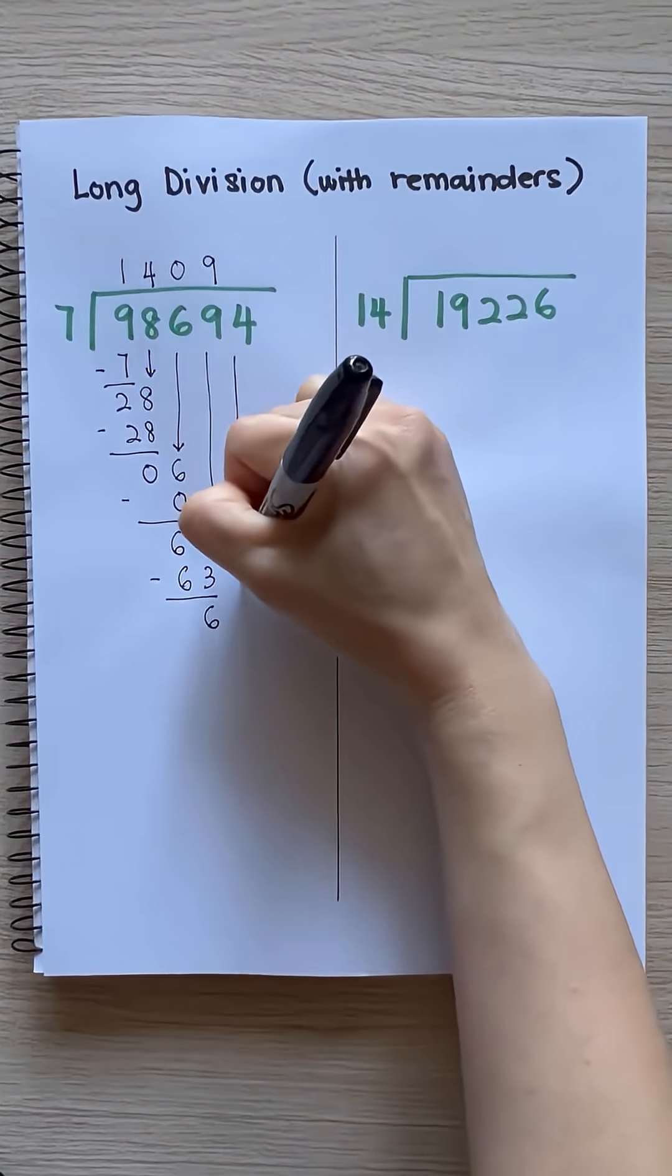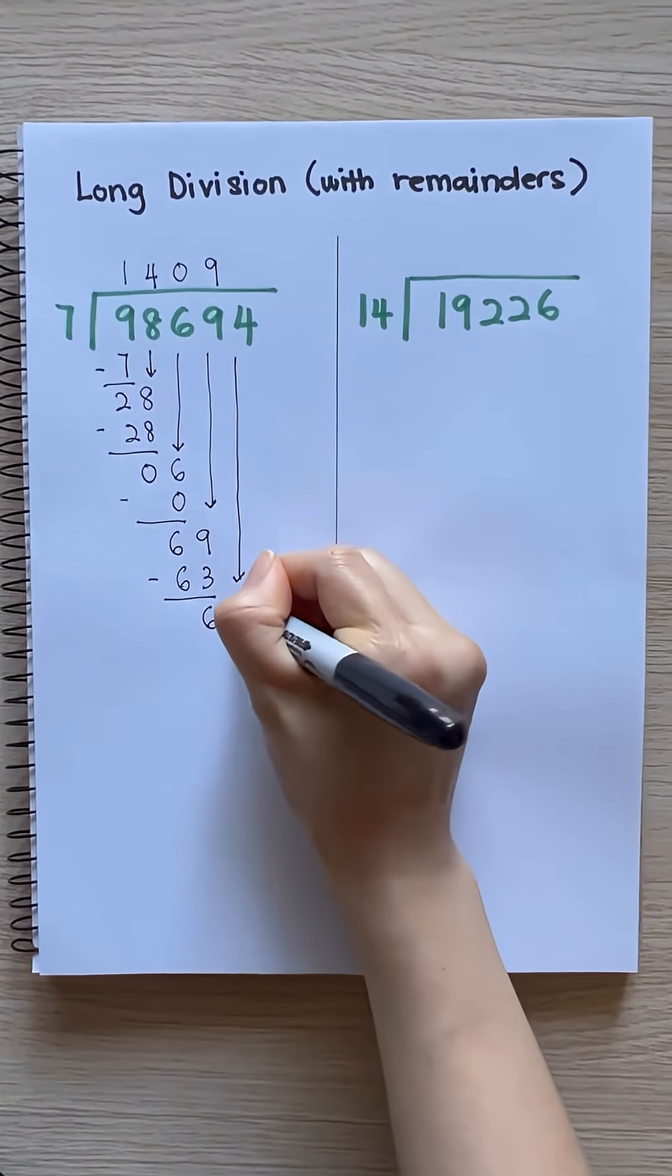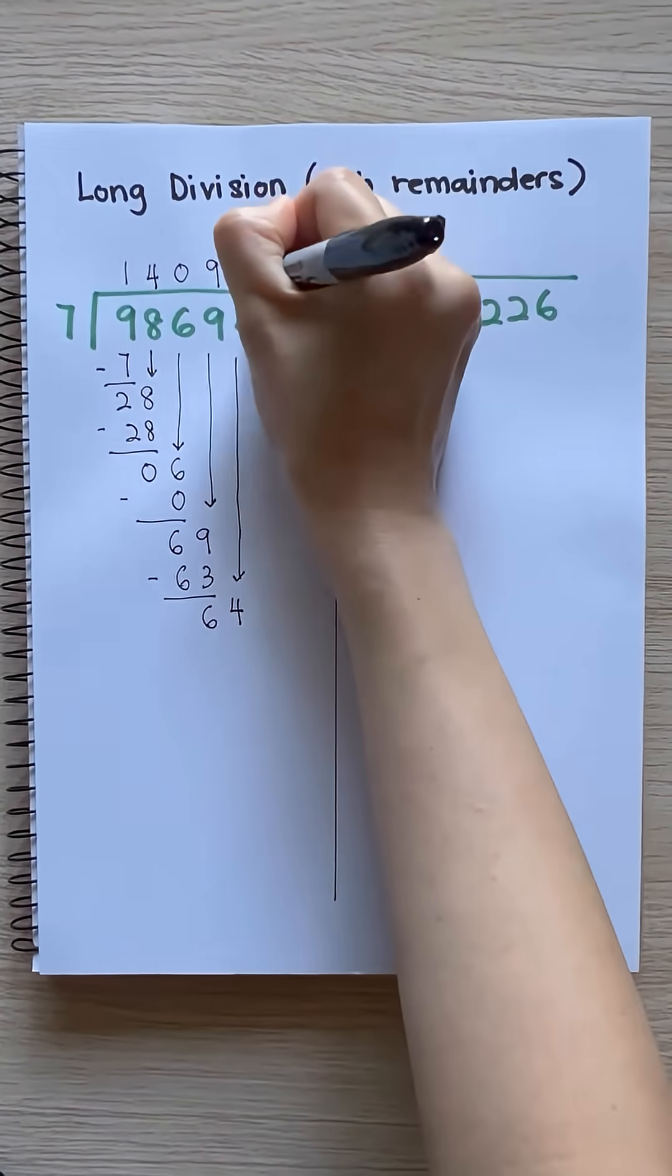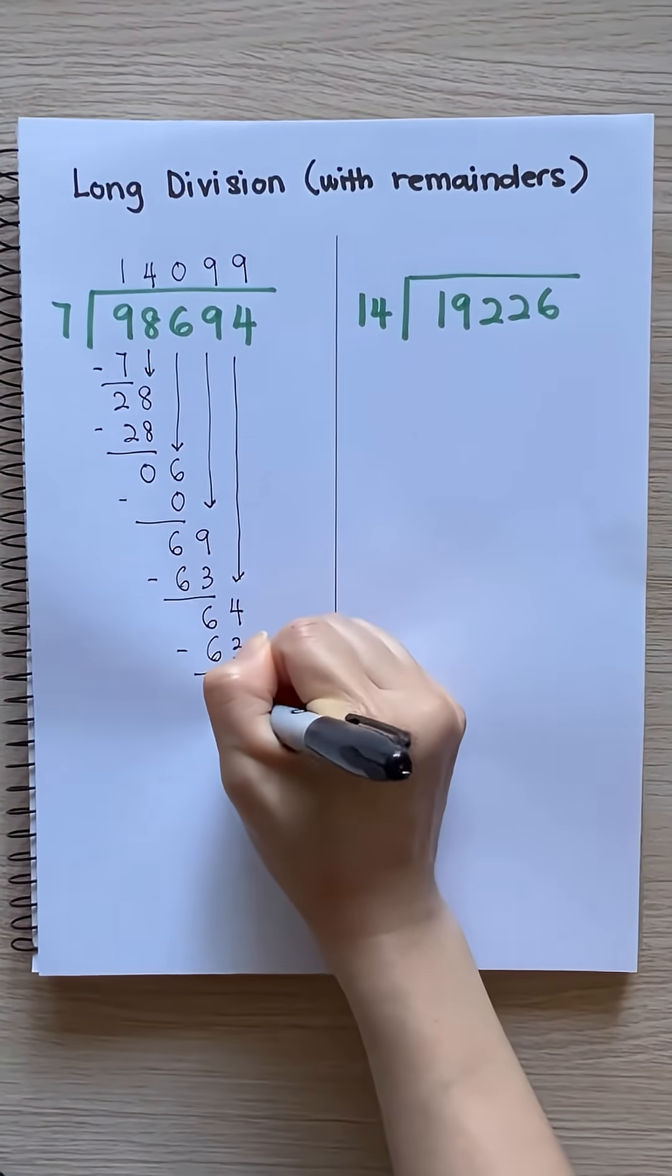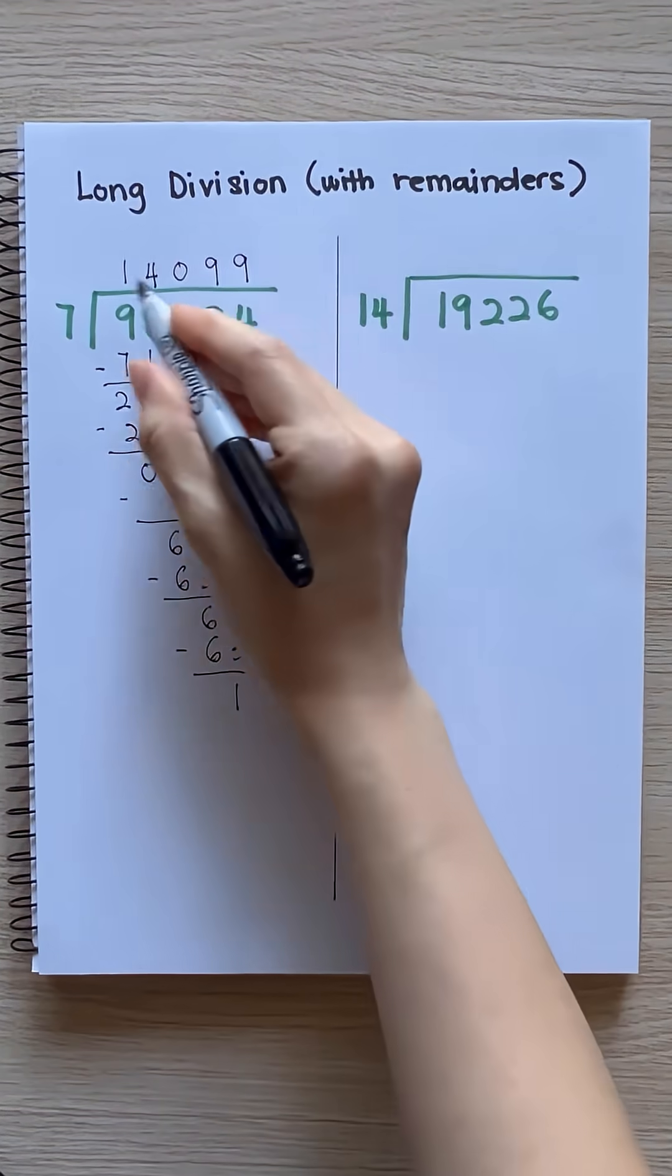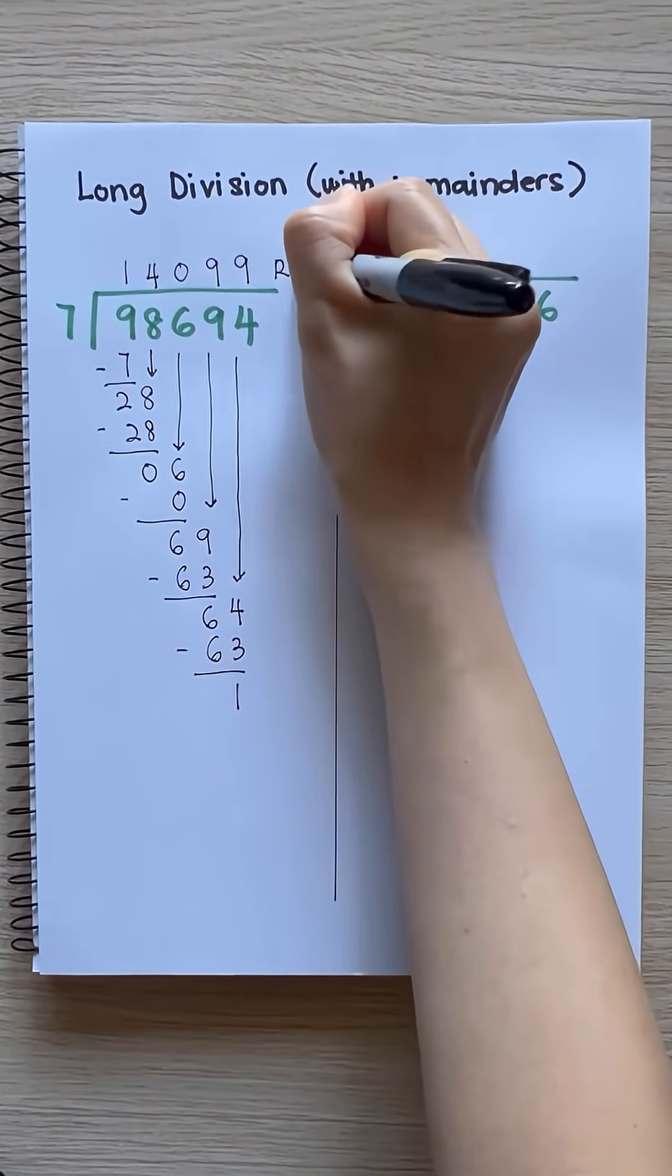Bring down 4. 7 times 9 equals 63. 64 minus 63 equals 1. Remainder 1.